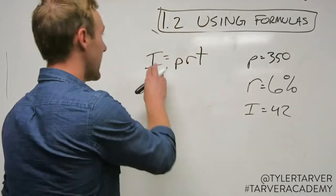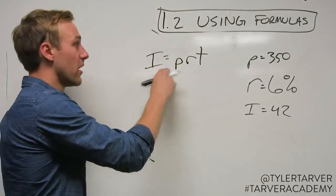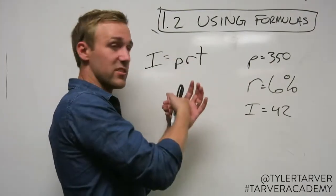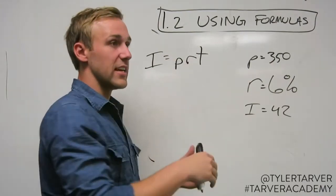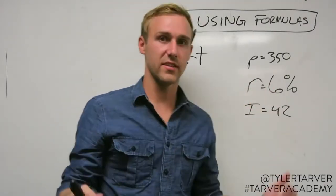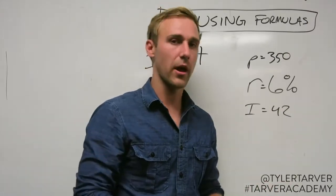So interest is the amount of money you're going to earn based on the principal, which is the amount you put into the account or savings. Rate is the percentage you're making off of what you put in, and time is how long it's in there in years, usually in years.